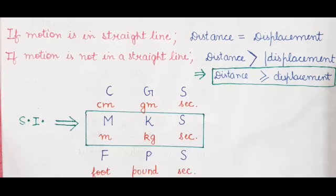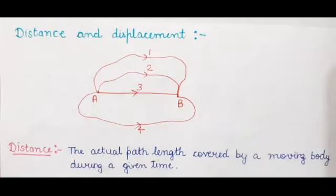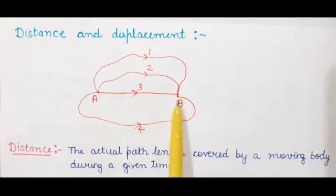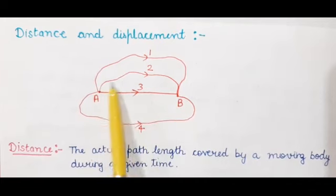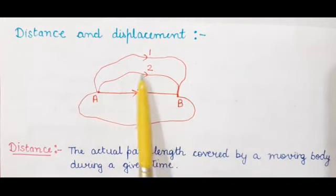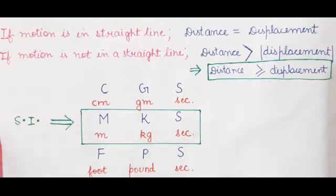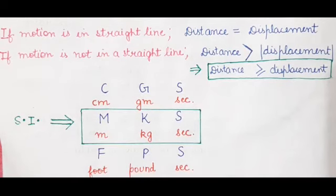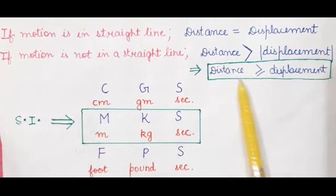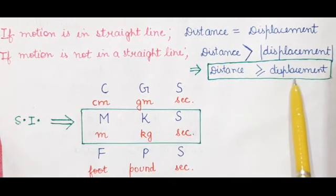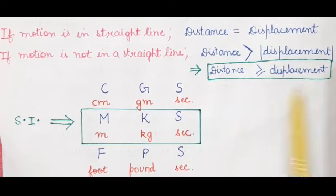If motion is in a straight line, distance is equal to displacement. If motion is not in a straight line, distance is always greater than displacement — as you can see from the diagram. So, distance is always equal to or greater than displacement. This is a very important point — please note it down.